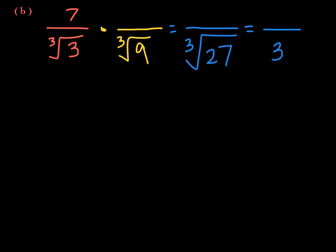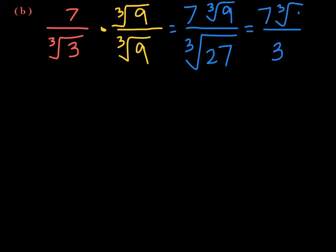Going back to fill in the pieces: if you multiply the denominator by the cube root of 9, you must also multiply the numerator by the cube root of 9. The numerator becomes 7 times the cube root of 9. That's already simplified because 9 is not a perfect cube and doesn't have a factor that is a perfect cube, so this is fully simplified.